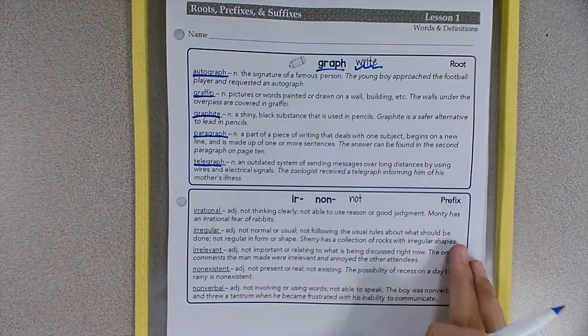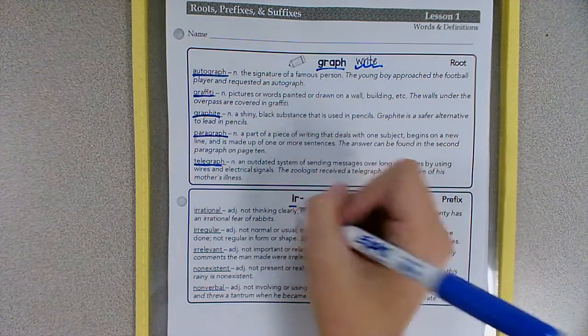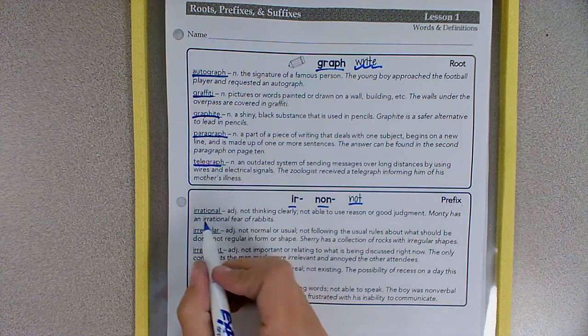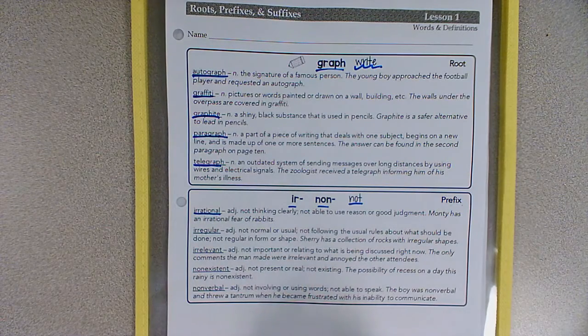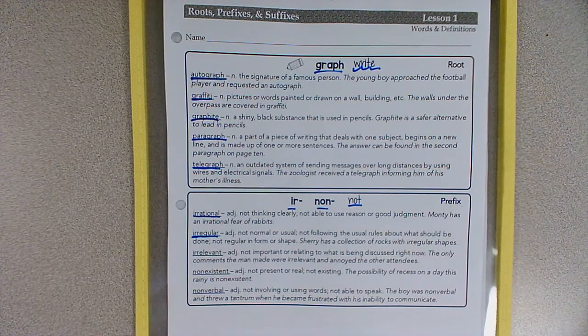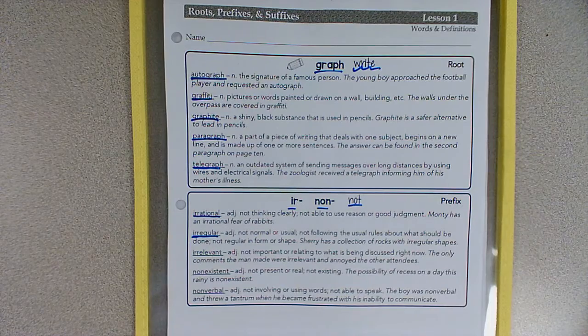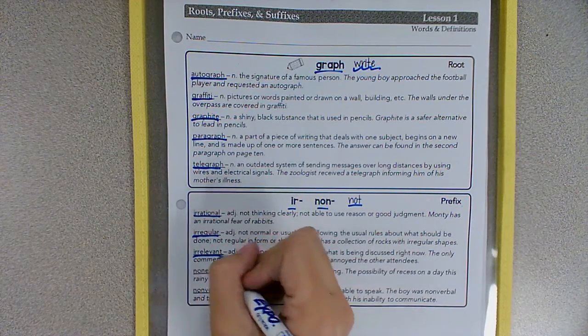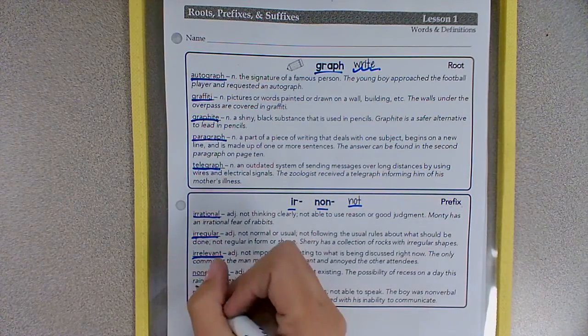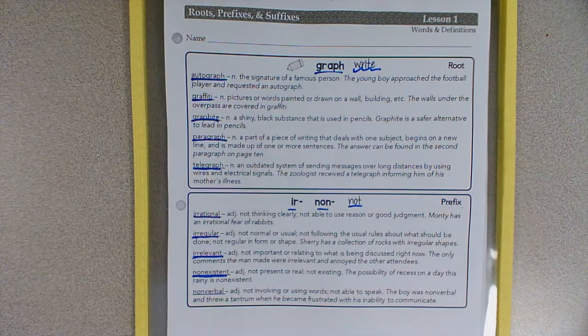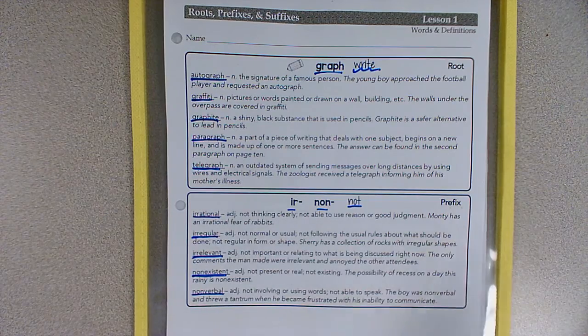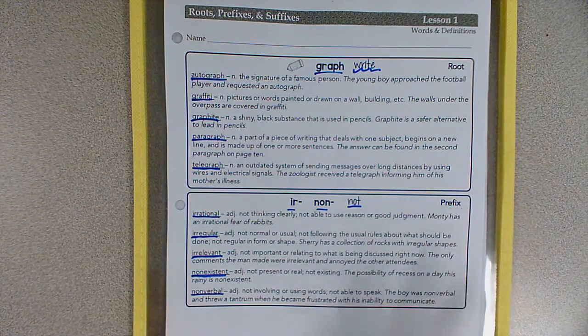Next, we have our prefixes. We have two prefixes this week: ir and non, both meaning not or the opposite of. So we have irrational, not thinking clearly or not able to use reason. Irregular, not normal or not usual, doesn't follow the usual rules or not regular in form or in shape. Irrelevant, something that's not important or doesn't relate to what's being discussed right now. Non-existent, meaning it's not present or real or doesn't exist. And nonverbal, something that doesn't involve words or someone who isn't able to speak.